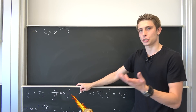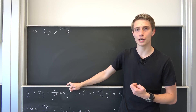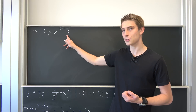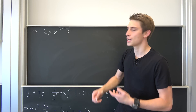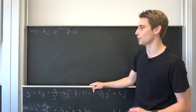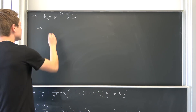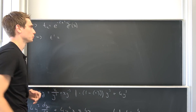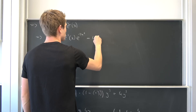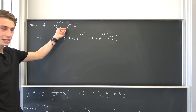Now, just like before, we would like to use variation of constants. That means we multiply the complementary solution by some differentiable function of x, u(x), and differentiate to find u(x). We can absorb the constant into this function of x — so let e-schlange be a function of x. Differentiating t using the product rule gives us t prime equals e-schlange prime of x times e to the negative 2x squared, minus 4x times e to the negative 2x squared times e-schlange of x.